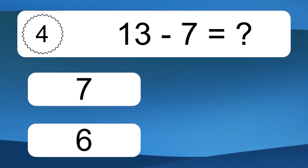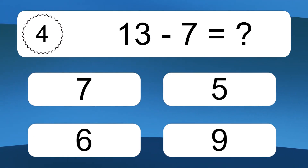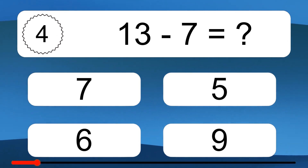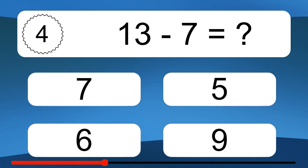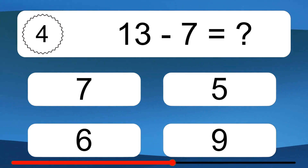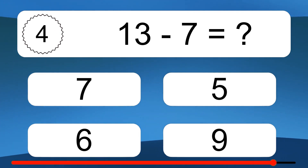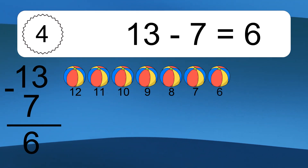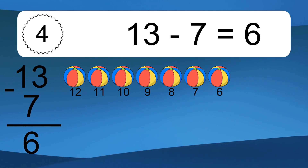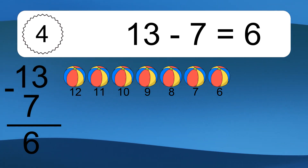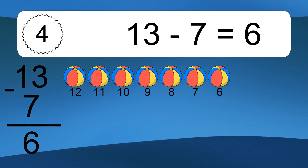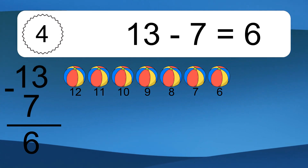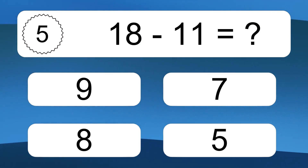13 minus 7 equals what? 13 minus 7 equals 6. Let's count it. 12, 11, 10, 9, 8, 7, 6.